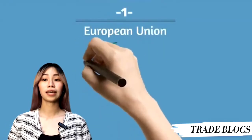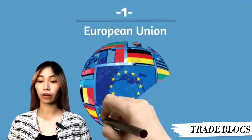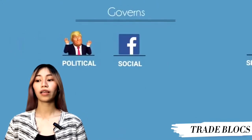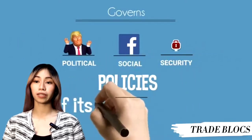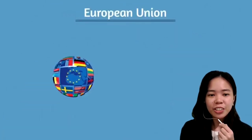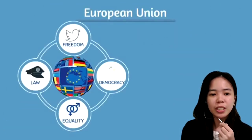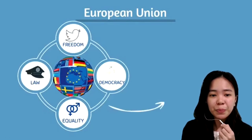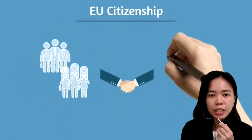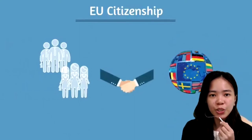The European Union is an international organization made up of 27 European countries. It governs common political, social, and security policies of its member states. The EU accounts for around 15% of the world's trading goods. The common principles and values that underlie life in the EU — freedom, democracy, equality, and the rule of law — promote peace and stability. EU citizenship is granted automatically to anyone who holds the nationality of an EU country.